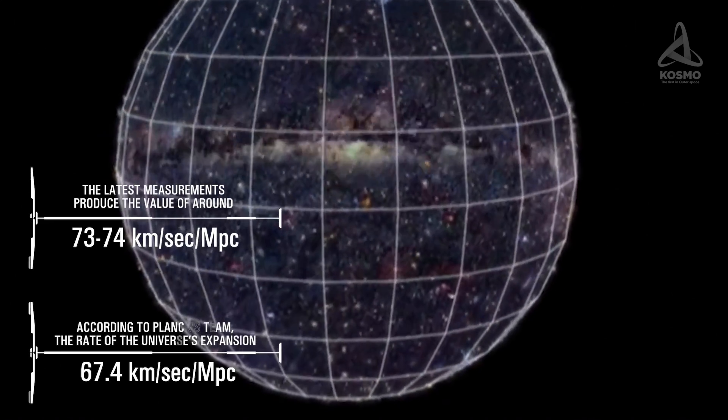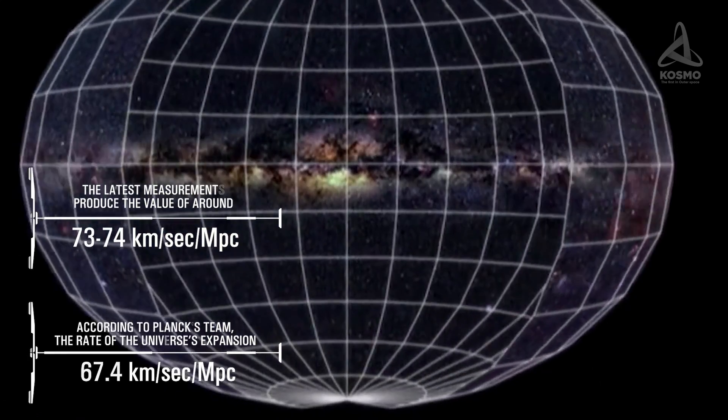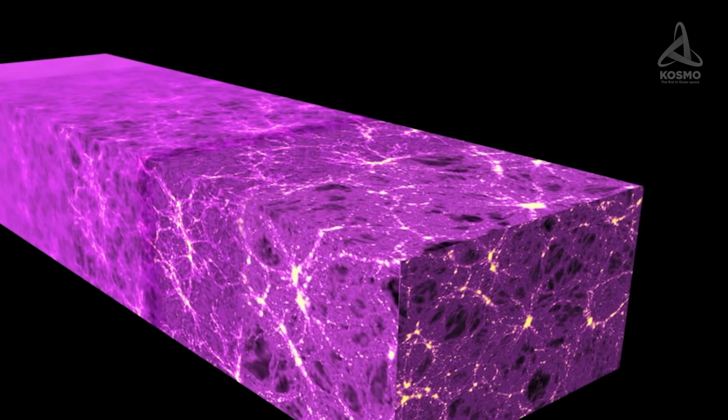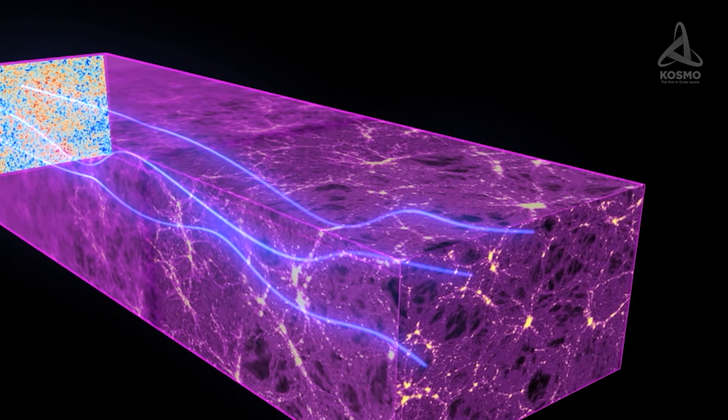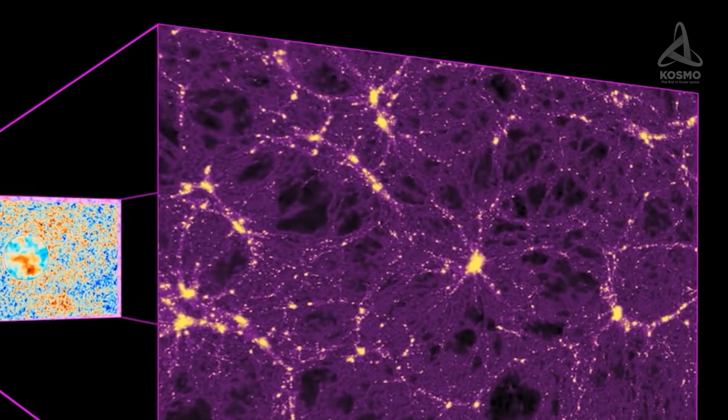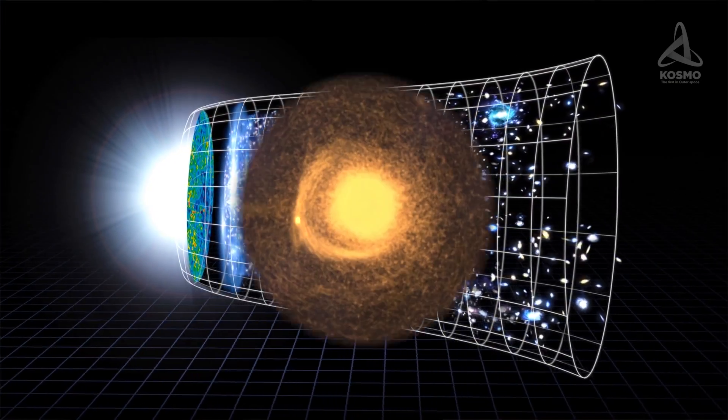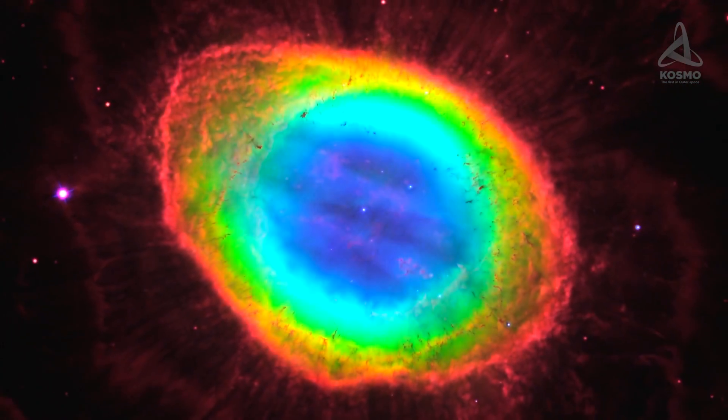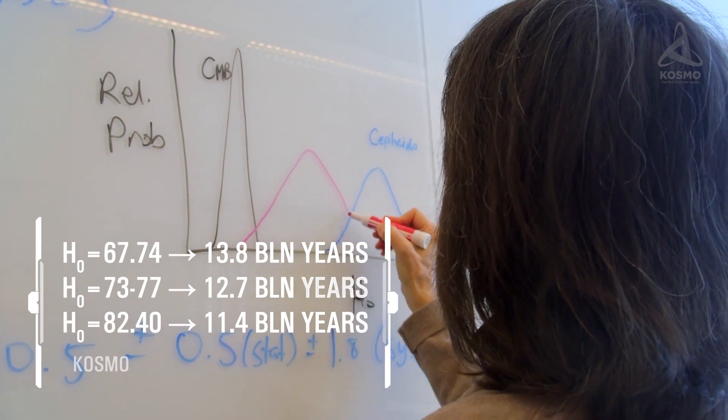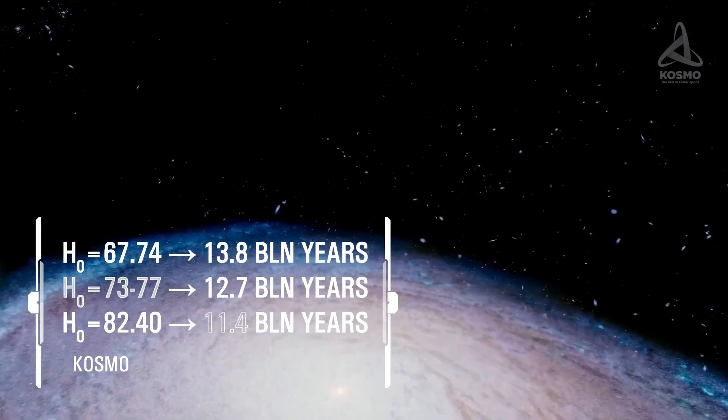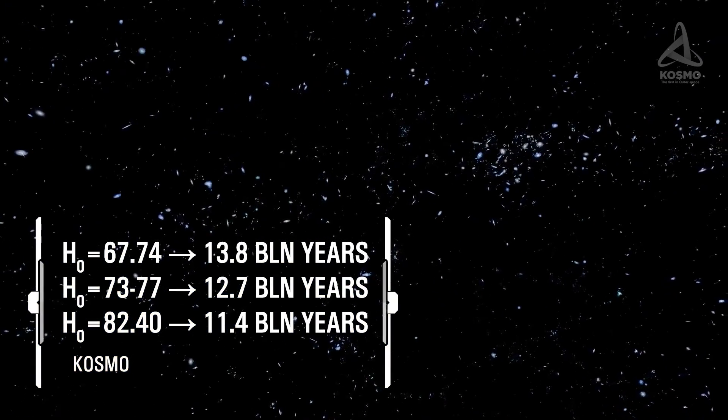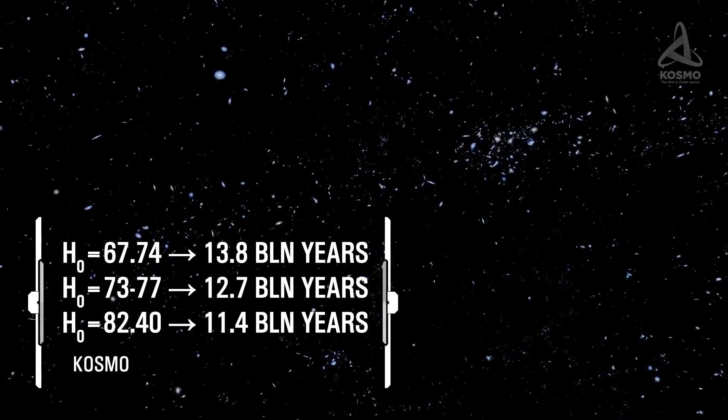Rees maintains that there should be a difference between the real rate of expansion today and the rate implied by the physics of the early universe. Firstly, it is obvious that accepted theories have to be seriously questioned. And secondly, there is the dark matter and dark energy riddle. Since the Hubble constant produces a bigger value for the rate of expansion, it suggests that the universe is younger than we think. The 67-74 constant corresponds to the age of 13.8 billion years. The 73 or even 77 constant corresponds to the age of not more than 12.7 billion years.